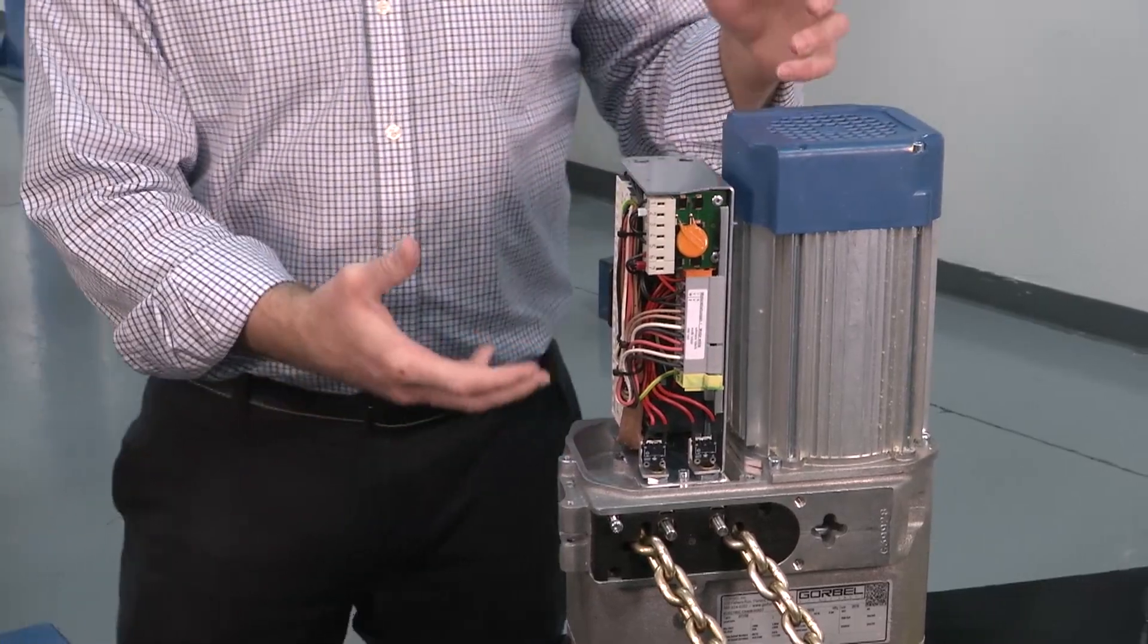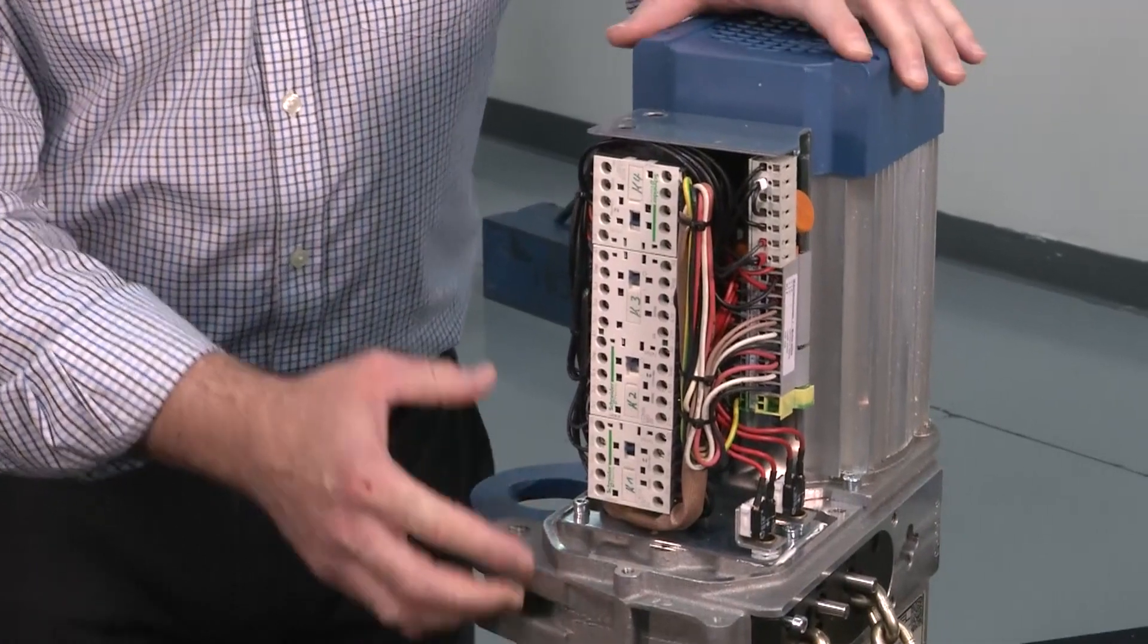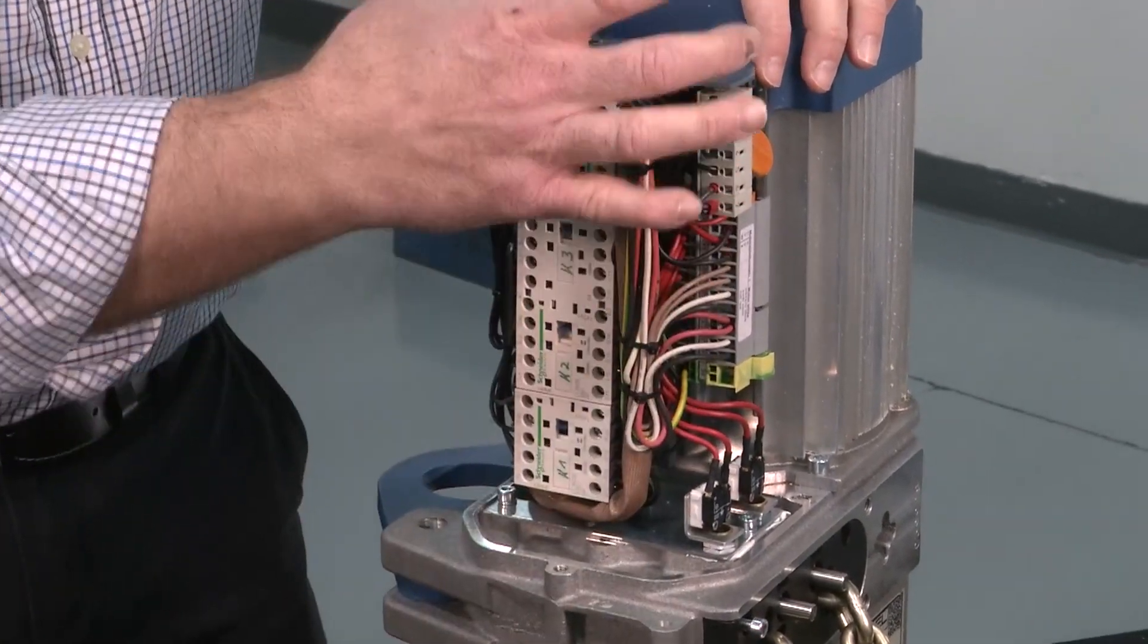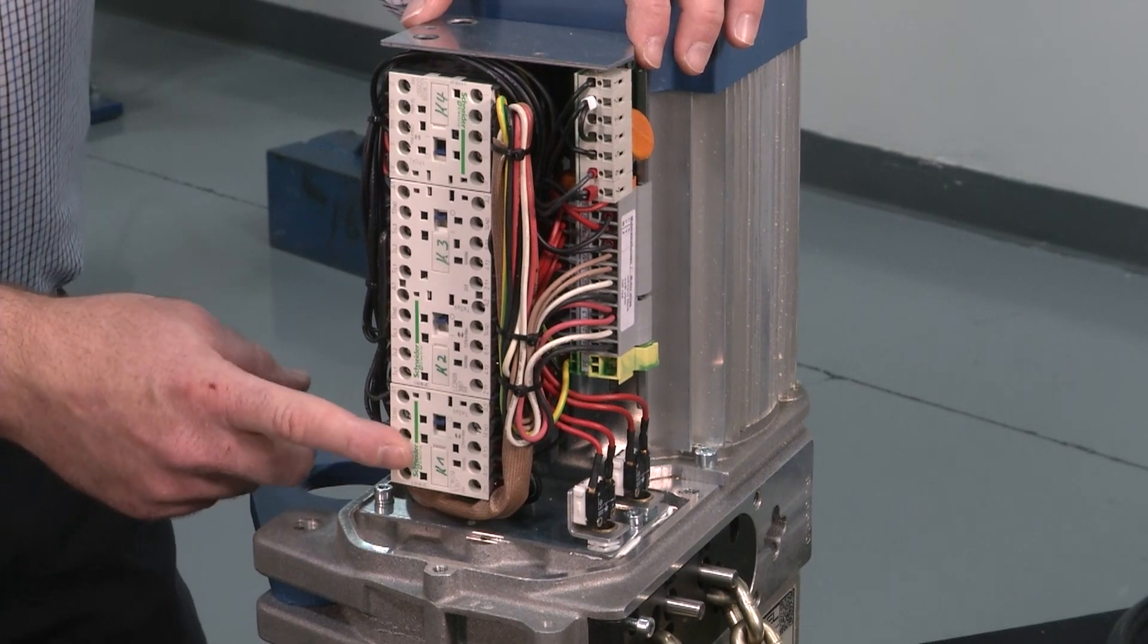So I've taken those off by loosening the bolts before we got ready to go here, and you'll notice here you have in one nice module all your contactors. Now one thing to note is every GS hoist has a mainline contactor, a true mainline contactor.